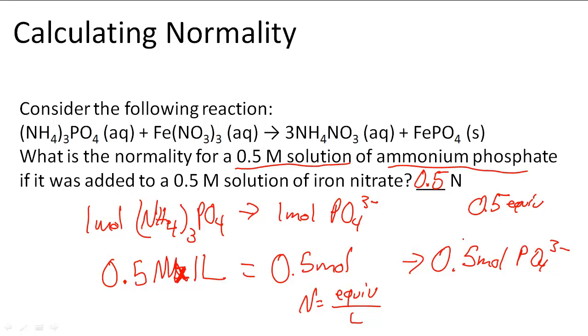And that just tells me that for every mole of NH4₃PO₄, I'm going to get one mole of PO4³⁻. And that's why I have that.